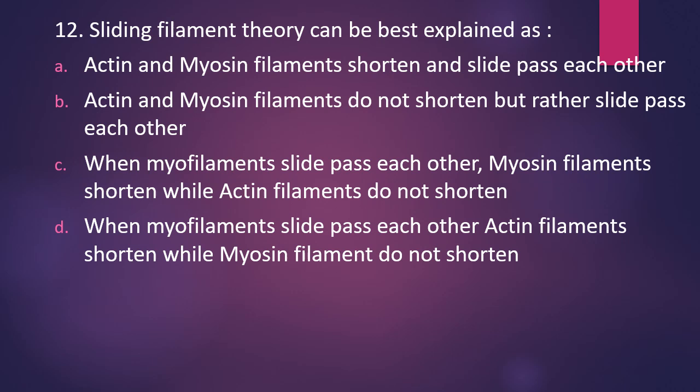Question number twelve: the sliding filament theory can best be explained as — actin and myosin shorten and slide past each other; actin and myosin do not shorten but slide past each other; myosin filaments shorten while actin do not; or actin filaments shorten while myosin do not. The correct answer is option B — actin and myosin filaments do not shorten but rather slide past each other.